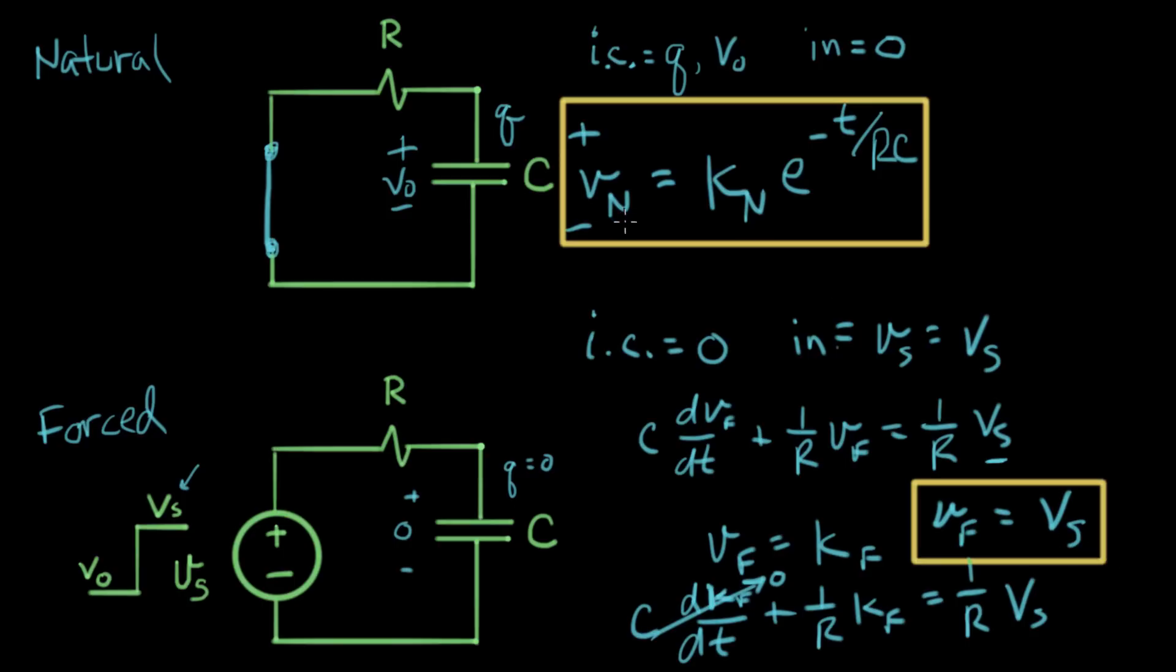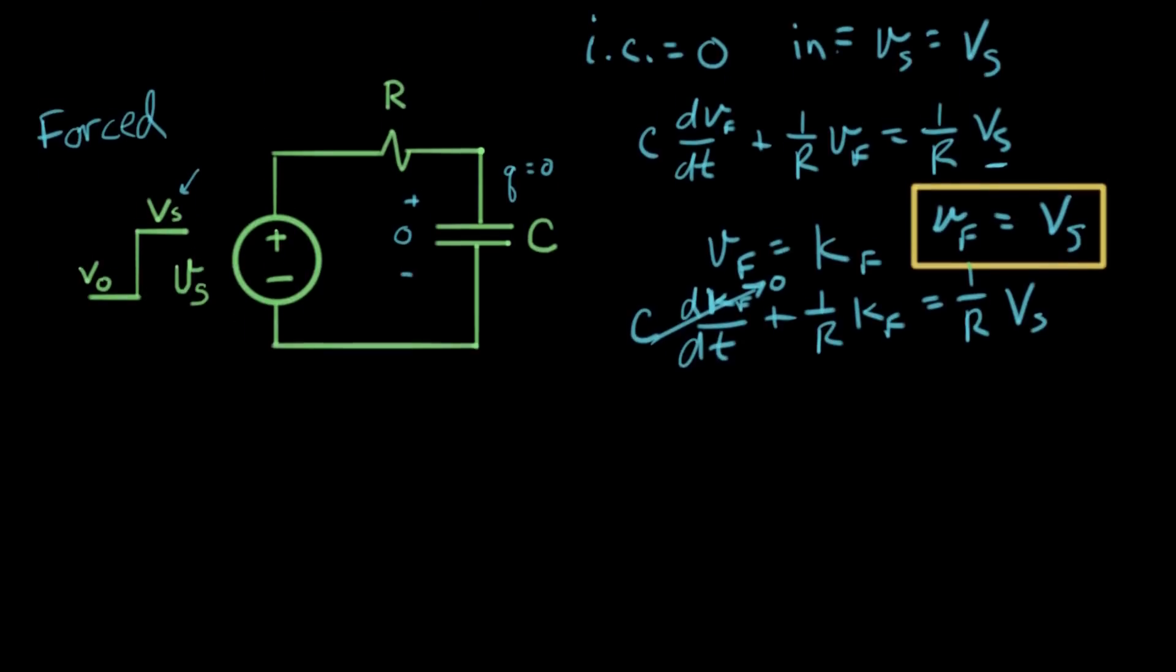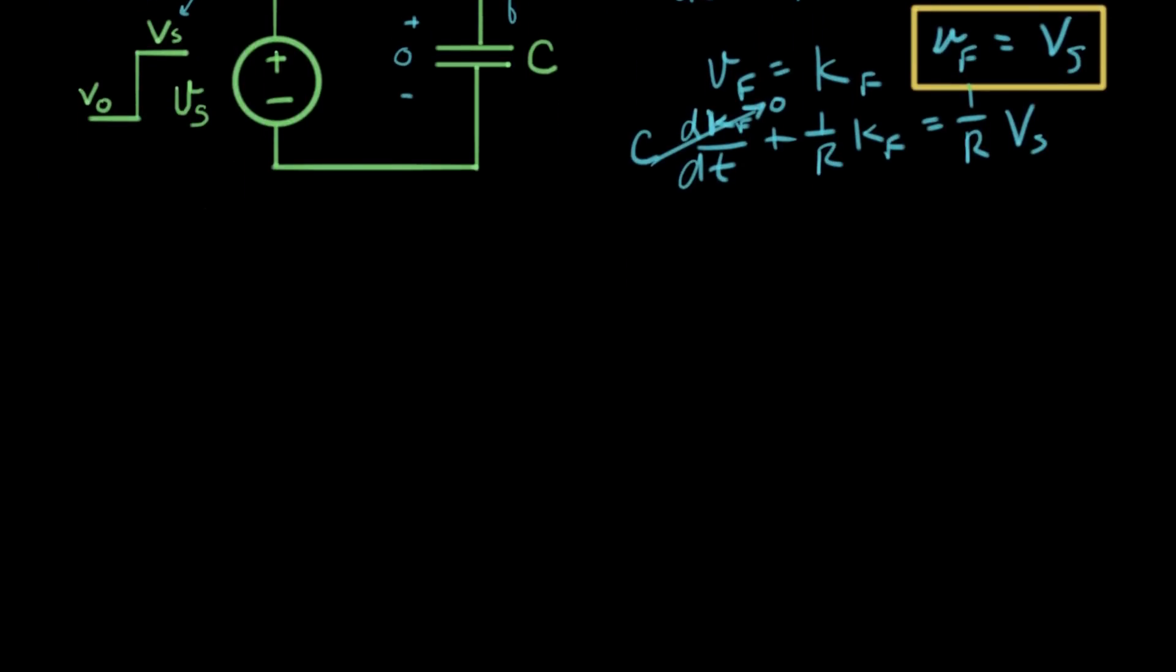So, now, I have our natural response right here. And in this square, we have our forced response. The forced response is just a constant VS. So, now, we're ready to come up with our total response. We'll call that V capital T. The total response is equal to the natural response plus the forced response. So, now, we're using our principle of superposition.